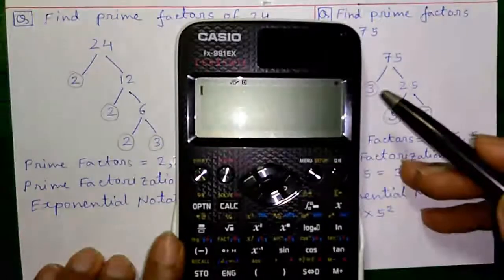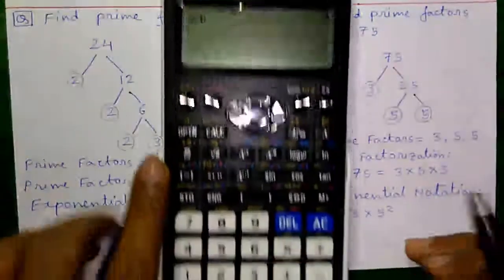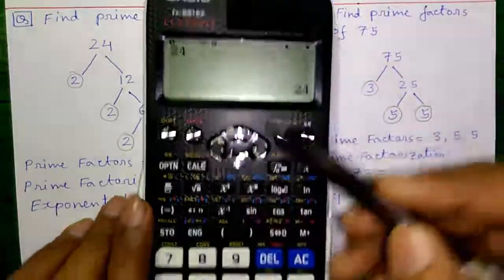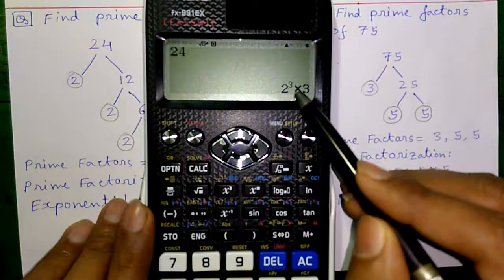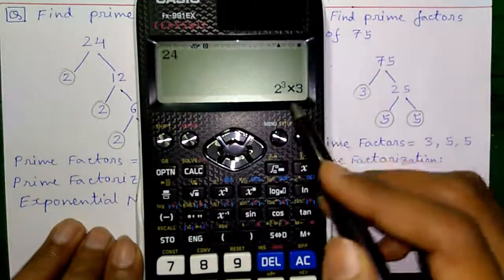Now let me show you how you can do prime factorization on the calculator. First enter the number 24 and press equals to. Then press shift and this button to get the factors. So it is in exponential notation 2 cube into 3. We know 2 cube is 2 into 2 into 2 into 3.